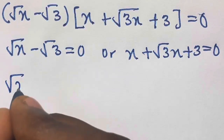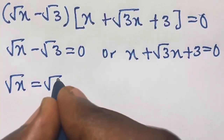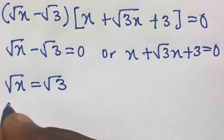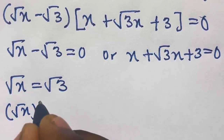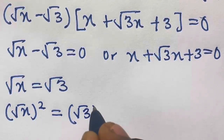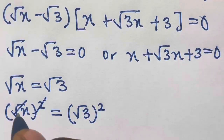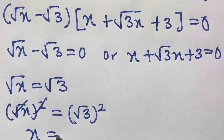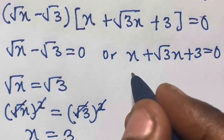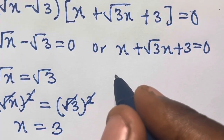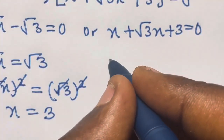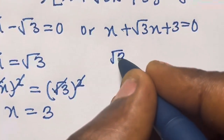From the first factor, we have square root of x equals square root of 3. To obtain x, we square both sides, giving us x equals 3. So our first solution is x₁ equals 3.